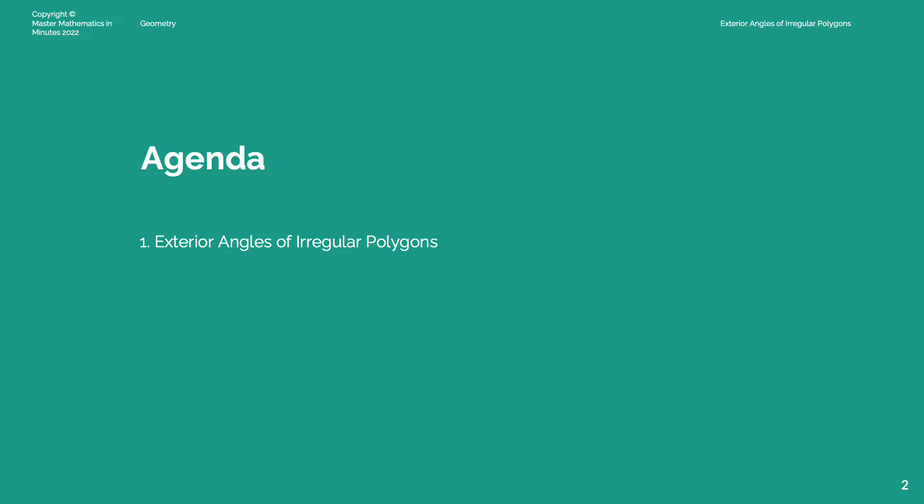Welcome to Master Mathematics in Minutes. Today's topic is about the exterior angles of irregular polygons, and we'll cover a couple of examples on how to calculate angles of irregular polygons. We will conclude the topic with a summary, and please subscribe for more videos.